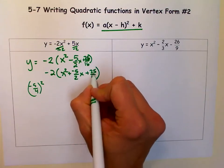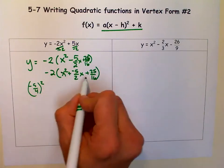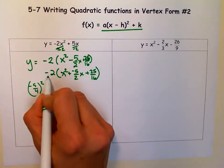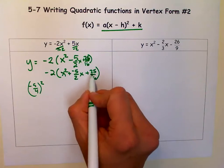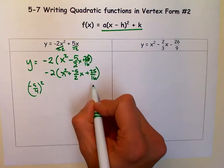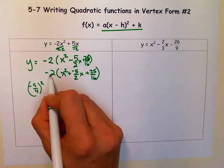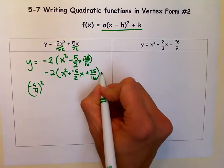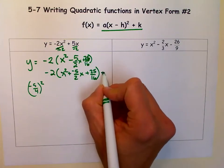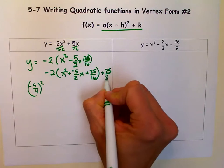When we add 25 sixteenths in here, we've really, because there's a negative 2 out here, we've really added a negative 25 eighths. If we've added a negative 25 eighths, then we have to add a 25 eighths out here.